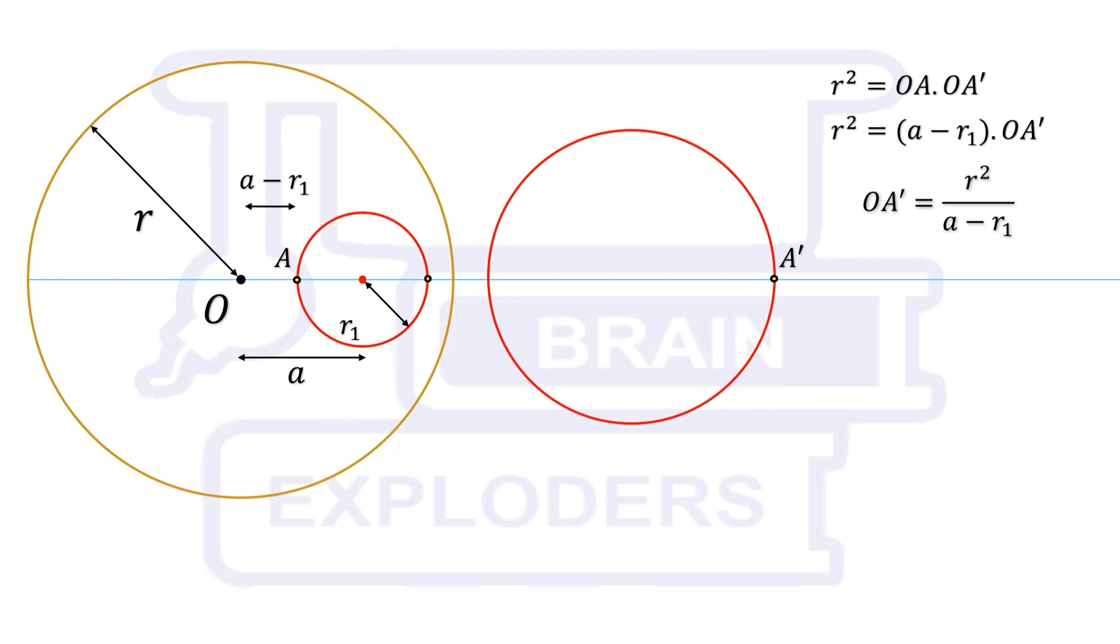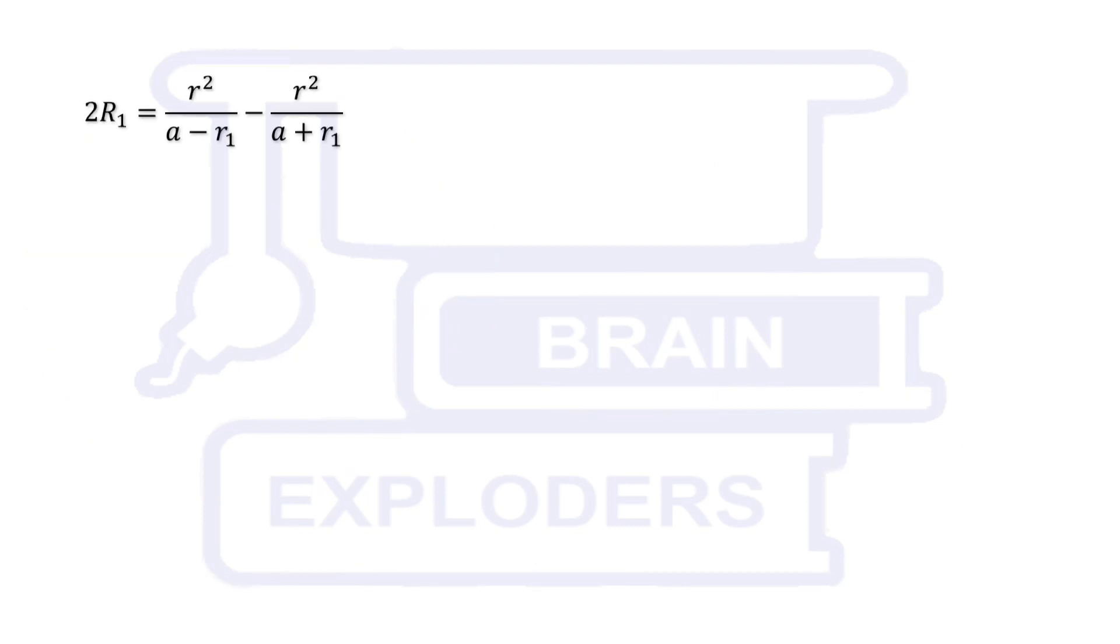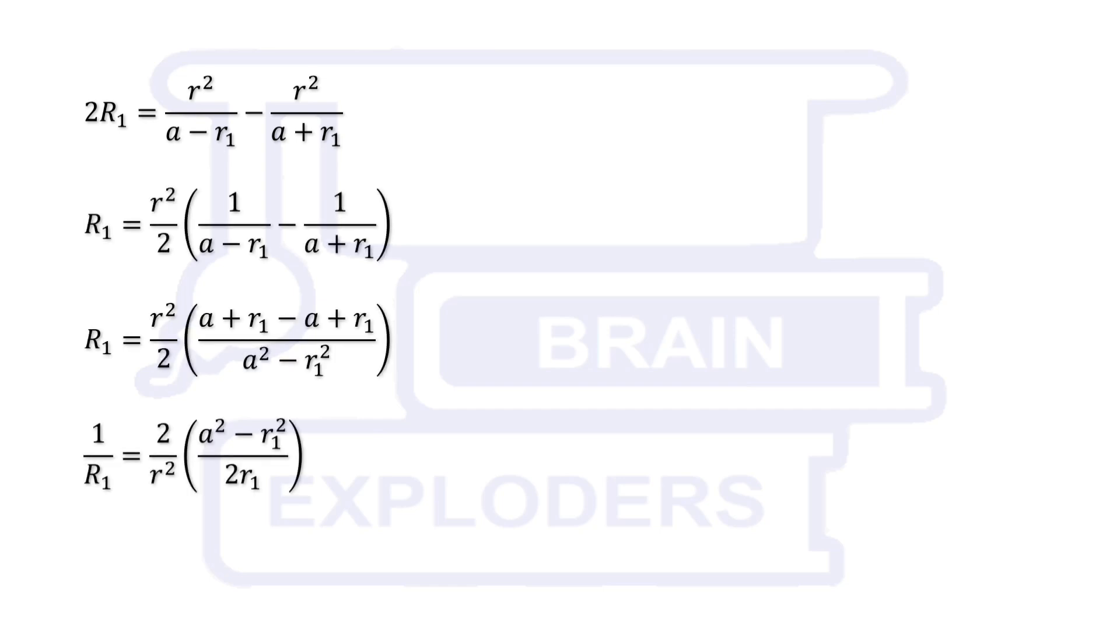Similarly, inverse of b is b dash and ob dash is equal to r squared over a plus r1. a dash b dash is the diameter of the inverse circle. Therefore, twice of capital R1 is equal to oa dash minus ob dash. On substituting the values of oa dash and ob dash we get two times R1 equals to r squared over a minus r1 minus r squared over a plus r1. Later, we will need the value of reciprocal of this radius therefore it is further solved up to 1 over R1.